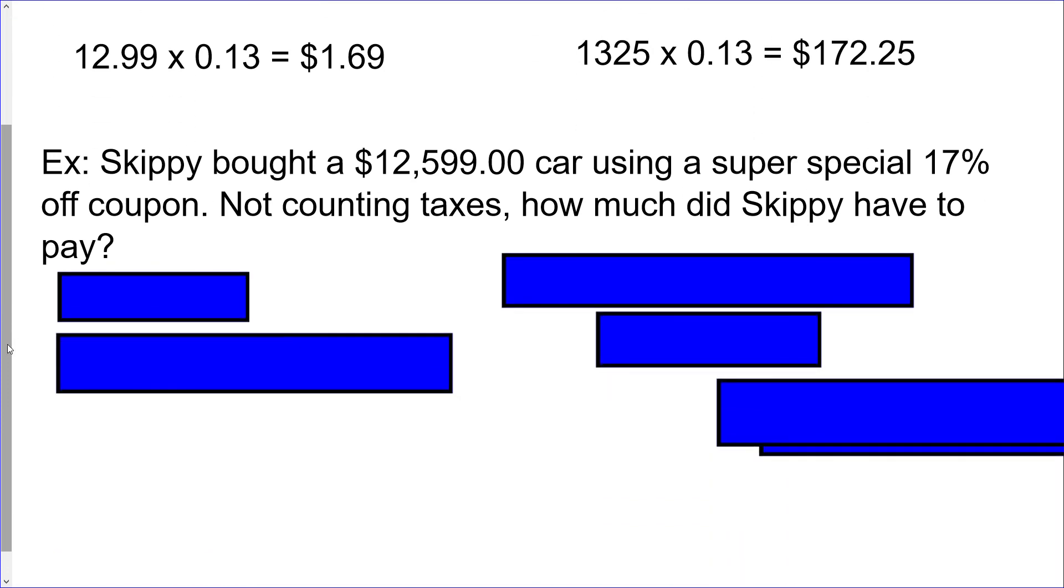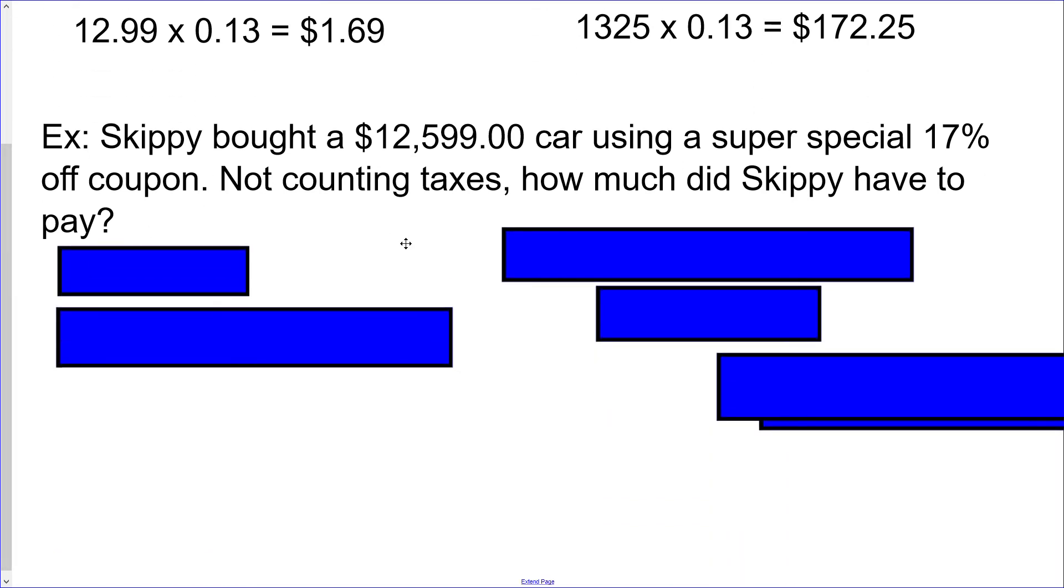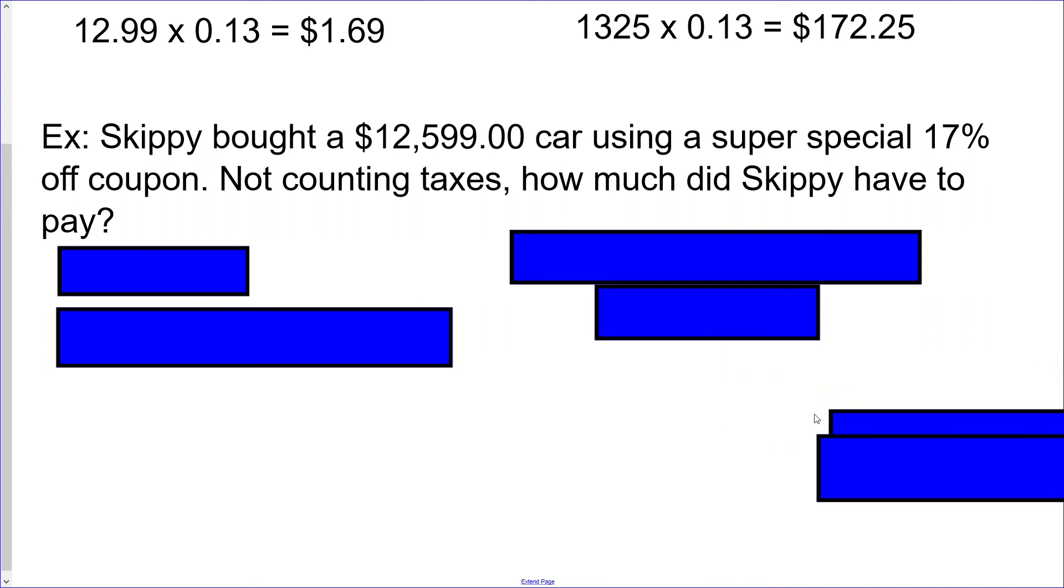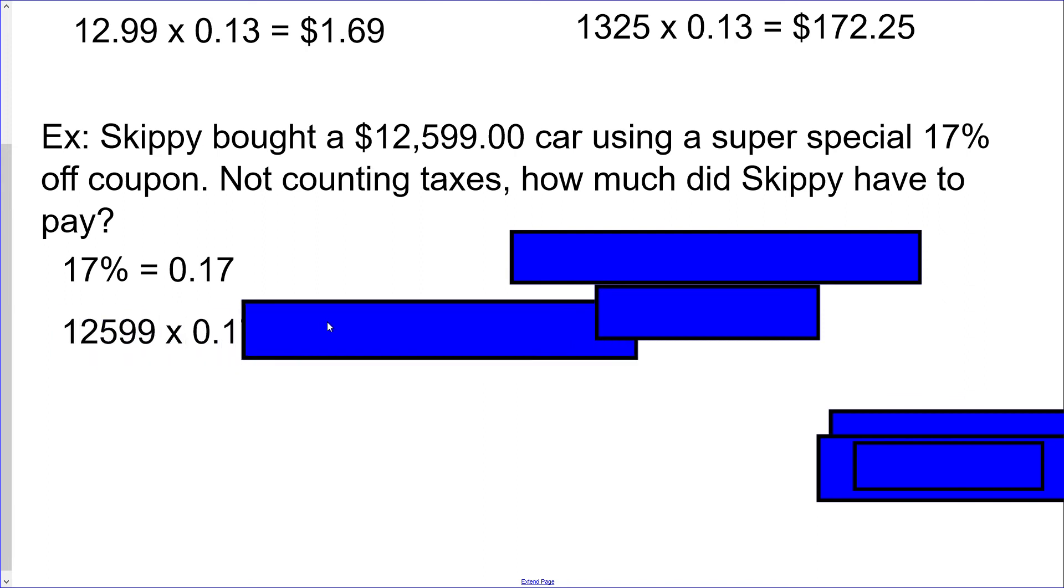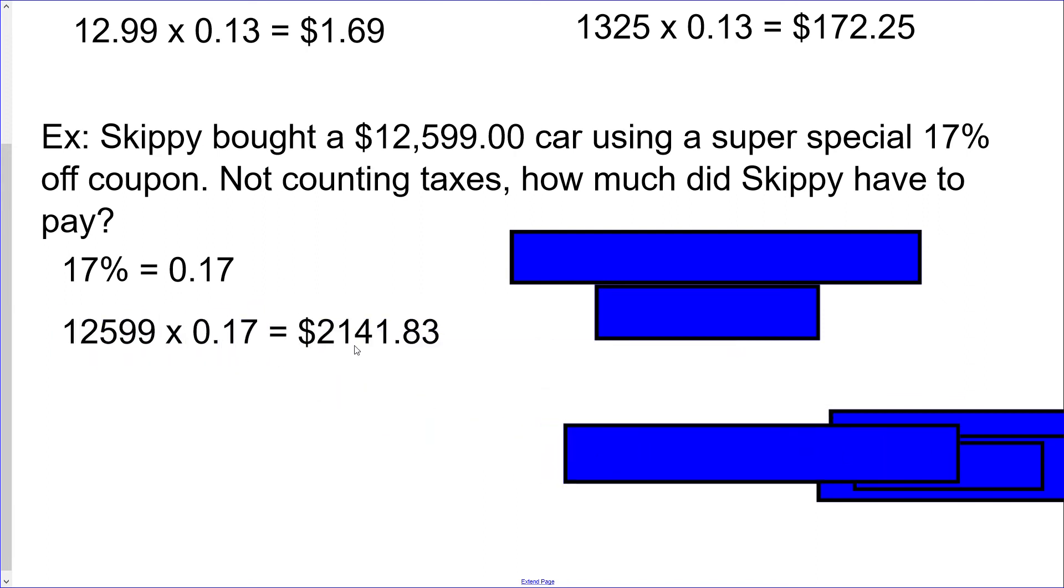So Skippy bought a $12,599 car using a super special 17% off coupon, not counting taxes. How much did Skippy have to pay? So you're going to do the same idea. First step is to convert that 17% to a decimal. So we've done that a number of times. So you divide by 100 and you get 0.17. And then you're wanting to just take your cost here and multiply it by that decimal. And you end up with $2,141.83. And there may be some rounding in there, but that's okay.